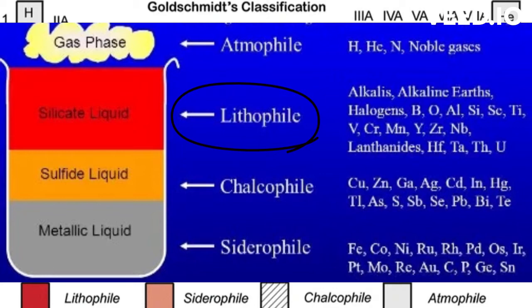Lithophiles are rock-loving or silica-loving elements. They are elements like sodium and potassium — those elements that are easily incorporated into the silicate structures produced by silicon and oxygen. As massive amounts of silica migrated upward to the surface, sodium, potassium, and other elements that do not interact favorably with iron made their way upward along with the silica. This brought to the surface large quantities of useful elements like aluminium, neodymium, and even uranium.